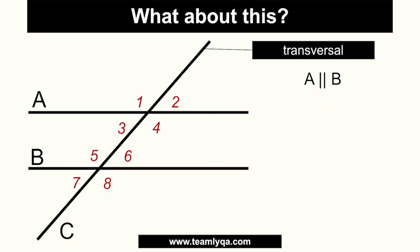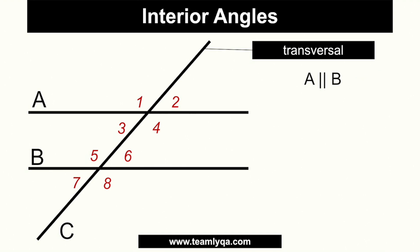Now, what if we have this situation? If it's stated that two lines — line A and line B — are parallel, that means they will never meet, no matter how far you extend them. The distance between them stays the same throughout. When lines A and B are parallel and cut by a single transversal — that's the technical term for line C — they form different kinds of angle pairs.